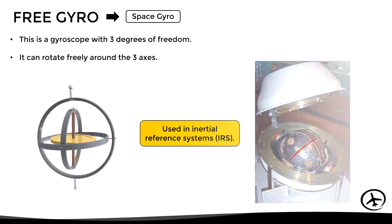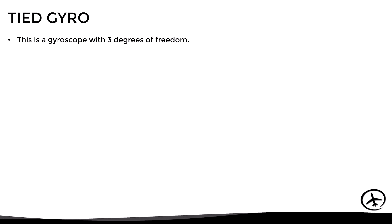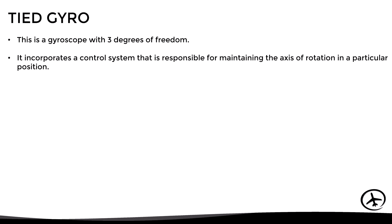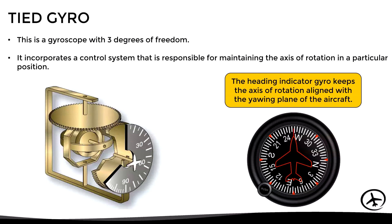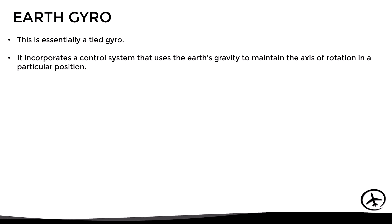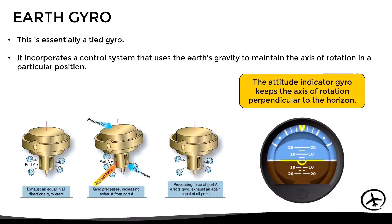The tied gyro also has three degrees of freedom, but it incorporates a control system that keeps the axis of rotation in a particular position. An example is the gyro found in the heading indicator, which keeps the axis of rotation aligned with the yawing plane of the aircraft to give an adequate heading indication. A similar variant is the earth gyro, which uses the Earth's gravity to maintain the axis of rotation in a particular position. This type is found in the attitude indicator, keeping the axis of rotation perpendicular to the horizon for an adequate attitude indication.